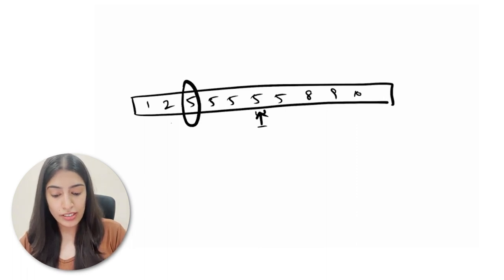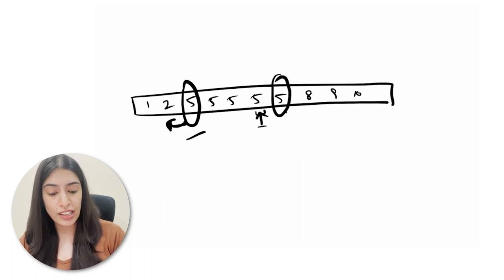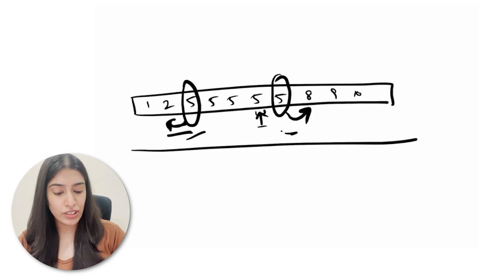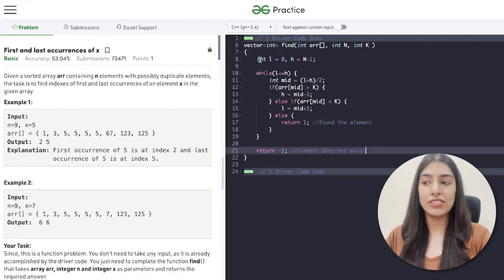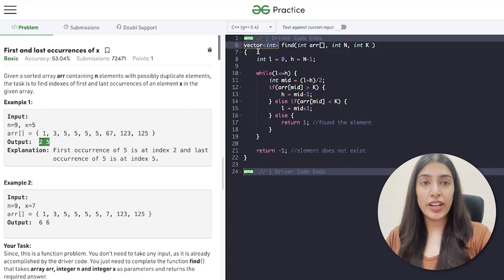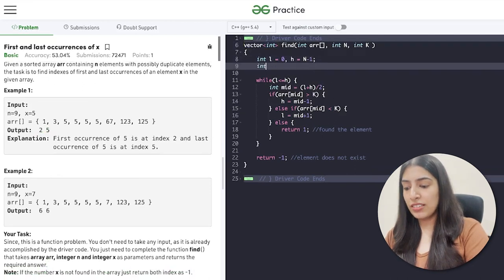To identify the first index, we need to be sure that the element previous to it is not the same. If the element at the previous index is not 5, then we've found the first index. Similarly for the last one, the element after it should not be 5. So in the same binary search code, we just add one small tweak: check the previous and next element to confirm whether we are at the first or last occurrence.